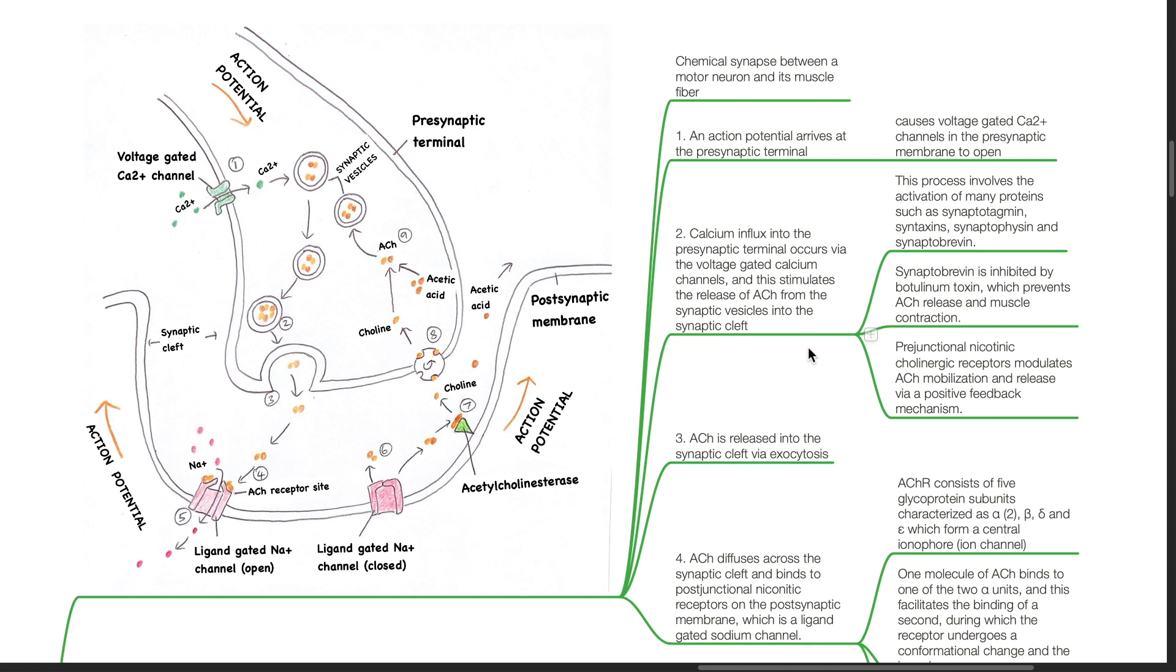This process involves the activation of many proteins such as synaptotagmin, syntaxins, synaptophysin, and synaptobrevin. Synaptobrevin is inhibited by botulinum toxin which prevents ACH release and muscle contraction.